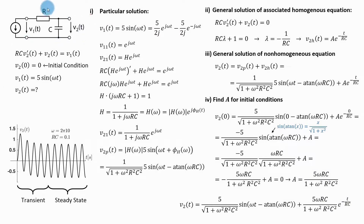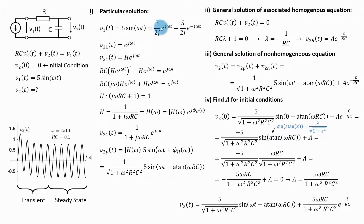Another example. Here I have the same circuit, same differential equation, and same initial condition, but this time the input voltage is a sinusoidal signal — a pure tone. My question is still: what is the output voltage? To solve this, I first find the particular solution. Because my input is a sine, I can break it into two complex exponentials. I do this because it is easy to find how these complex exponentials are transferred through the system: since the complex exponential is the eigenfunction of this differential equation, the output will be the same complex exponential multiplied by a complex number.